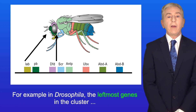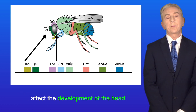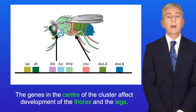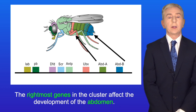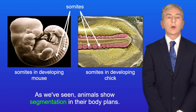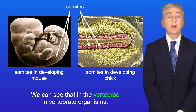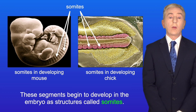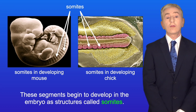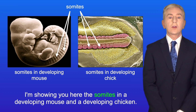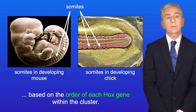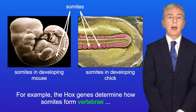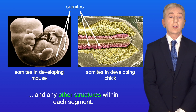For example, in Drosophila, the leftmost genes in the cluster affect the development of the head. The genes in the center of the cluster affect development of the thorax and the legs, and the rightmost genes affect the development of the abdomen. Animals show segmentation in their body plans, and these segments begin to develop in the embryo as structures called somites. The HOX genes determine how each somite develops based on the order of each HOX gene within the cluster — for example, how somites form vertebrae and any other structures within each segment.